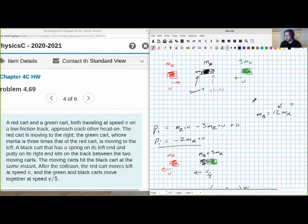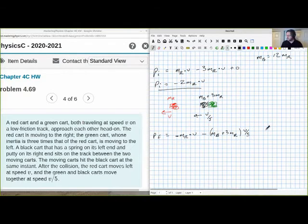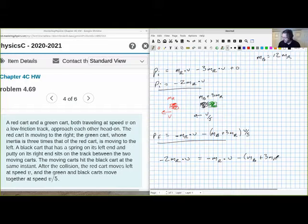Because there's nothing else outside of those three things for them to interact with. So that means that this expression for the initial momentum has to be equal to this momentum for the final momentum. So that gives us a full equation. Let's put those together. Minus 2 m sub r times v equals, that's the before, minus m sub r times v minus m sub b plus three m sub r times v over five.